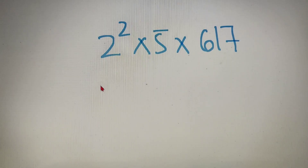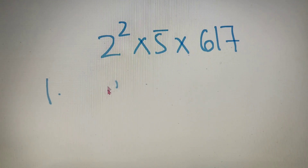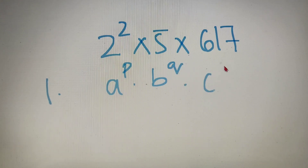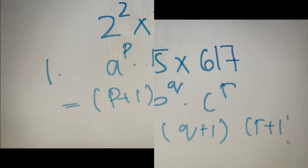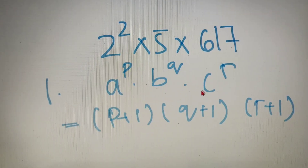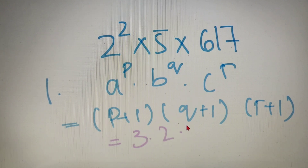Now the first part that we have to calculate is the number of factors. The formula for calculating the number of factors is: suppose the prime factorization of the number is a raised to p into b raised to q into c raised to r, then the number of factors is equal to (p + 1) into (q + 1) into (r + 1). So following the same formula for this question, our answer will be 3 into 2 into 2, which is nothing but 12.